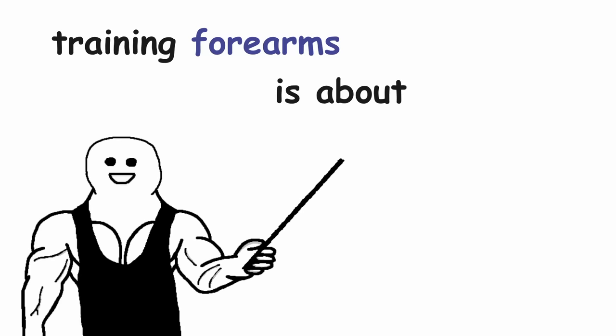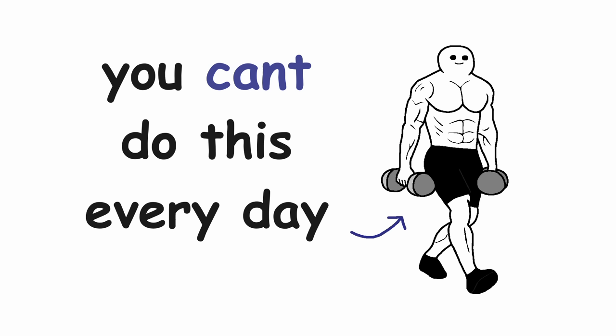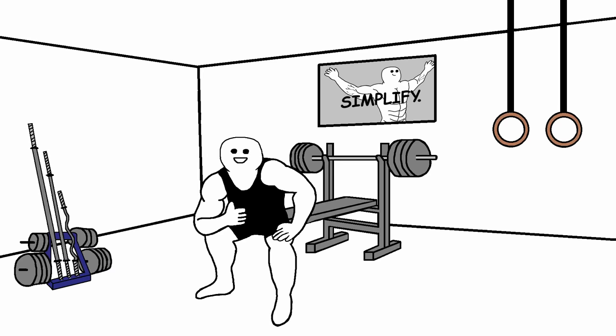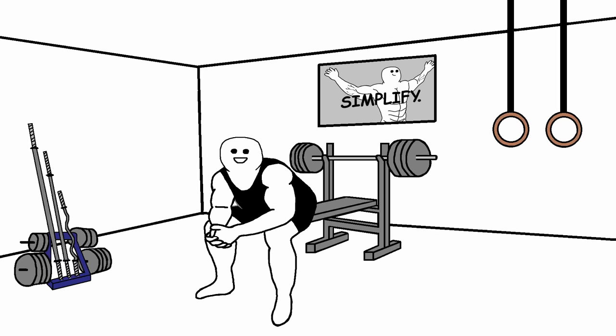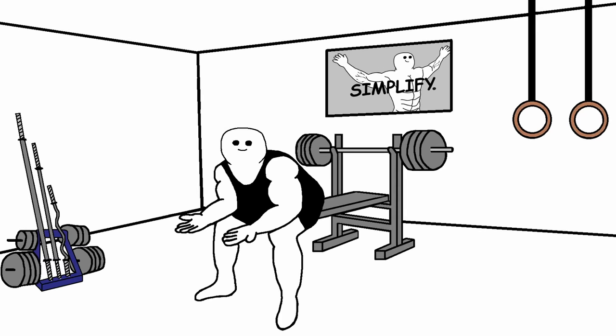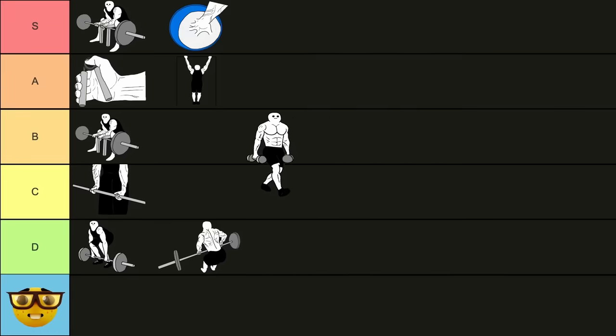And as we have learned earlier, training forearms is mainly about high frequency, which can't really be achieved by the farmer's walk. But it can be a nice addition in combination with some forearm isolation exercise like the rice bucket training. So the farmer's walk is going into the B tier.